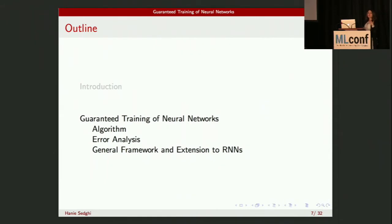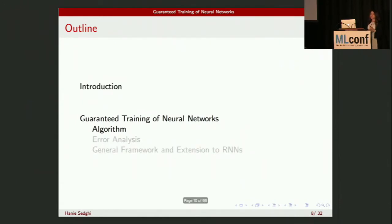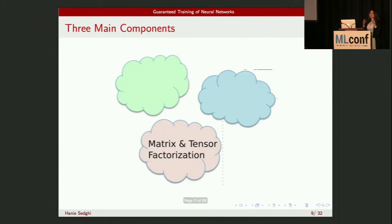Next I'm going to talk about our method on guaranteed training of neural networks. By guaranteed training, we mean that we have designed an algorithm that is guaranteed to give you the global optimum — the best possible solution. Let me dive into the details of the algorithm itself. To make it more accessible, I'm going to talk about three main components we have in our algorithm.